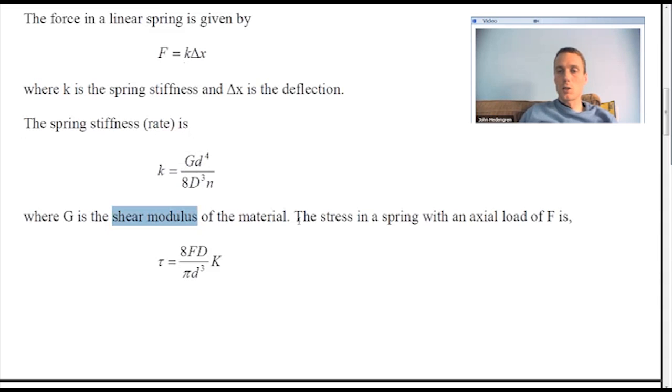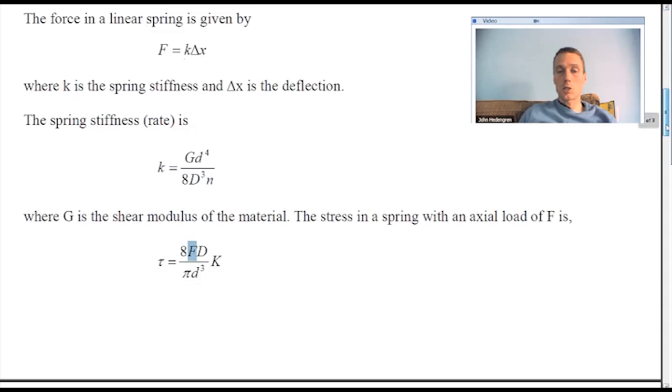So G is the shear modulus. The stress in the spring with the force F is going to be equal to this equation here. So as you increase the diameter of the spring, this stress becomes less, to the cube. So as the force increases, the stress increases linearly. And the diameter also is affecting that as well. So that's the stress in the spring.